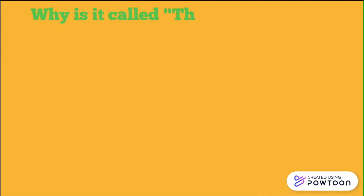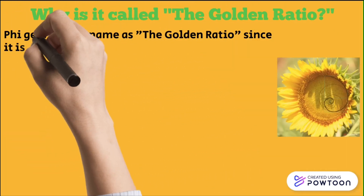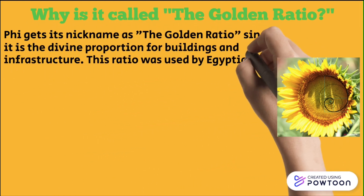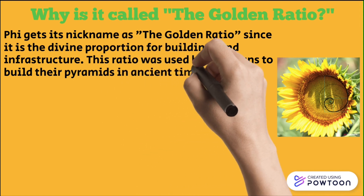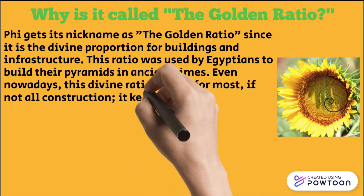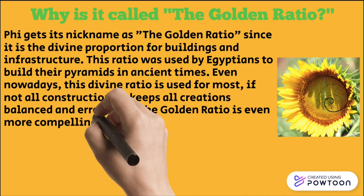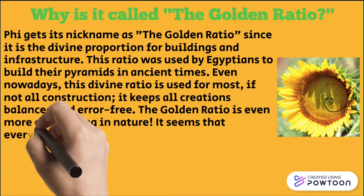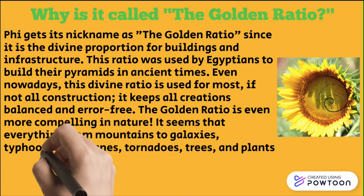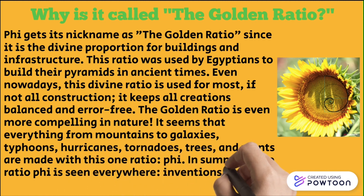Why is it called the golden ratio? Phi gets its nickname as the golden ratio since it is the divine proportion for buildings and infrastructure. This ratio was used by Egyptians to build their pyramids in ancient times. Even nowadays, this divine ratio is used for most, if not all, construction — it keeps all creations balanced. The golden ratio is even more compelling in nature; it seems that everything from mountains to galaxies, typhoons, hurricanes, tornadoes, trees, and plants are made with this one ratio, phi. In summary, phi seems to be everywhere.